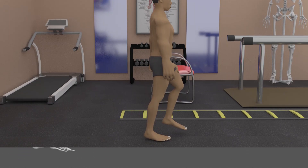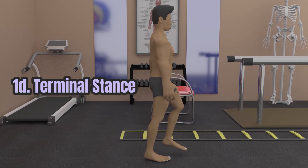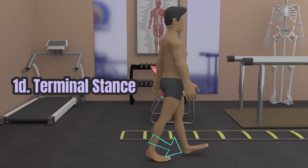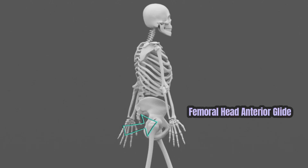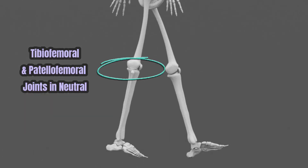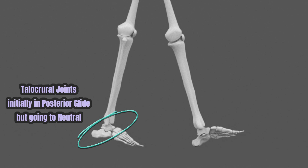After mid stance comes the terminal stance. It starts when the heel rises off the floor and ends when the opposite heel strikes the ground. The femoral head here glides anteriorly to allow hip 15 degrees of hyperextension. The tibiofemoral and patellofemoral joints are neutral, while the talocrural joint is still on a posterior glide.